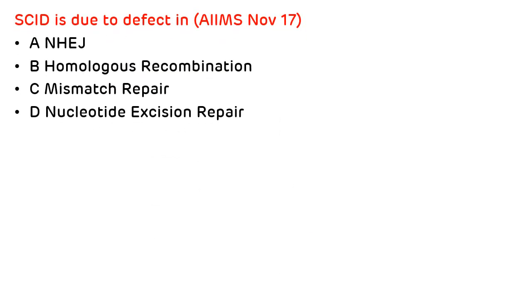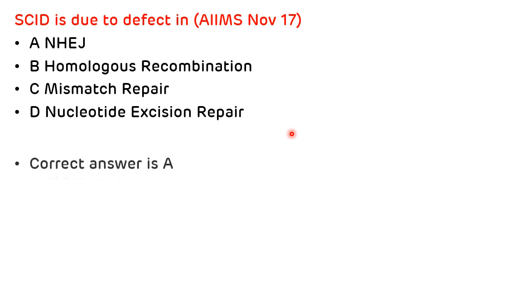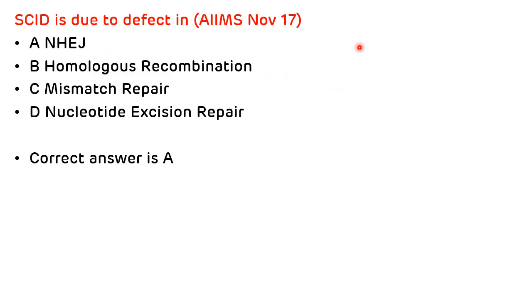Now we will see multiple choice questions from this topic. The first question, asked in AIIMS November 2017: Severe combined immunodeficiency is due to a defect in which of the following? Options: non-homologous end joining, homologous recombination, mismatch repair, or nucleotide excision repair. The answer is non-homologous end joining. A defect in homologous recombination leads to increased risk of breast cancer and Fanconi anemia.